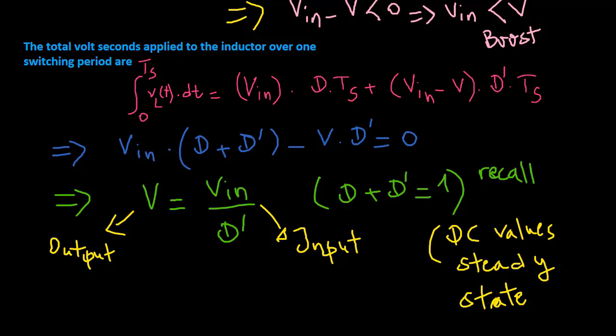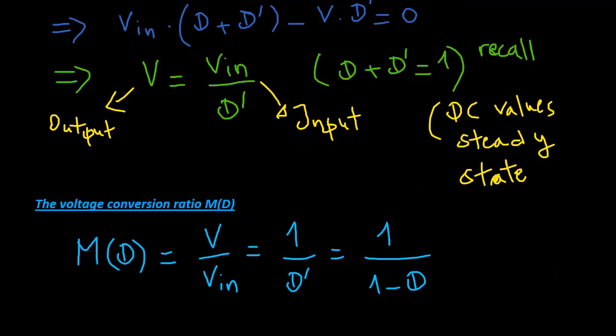The voltage conversion ratio M is the ratio of the output to the input voltage of a DC-DC converter.